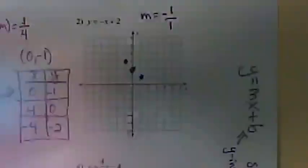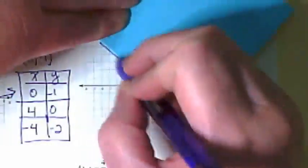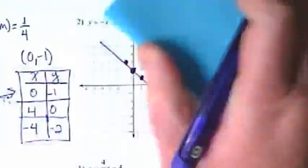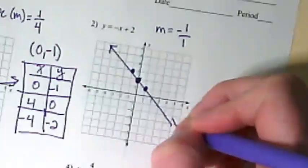So let's go ahead and put our line through. We always draw arrows on both ends to show that line continues to go on and on.